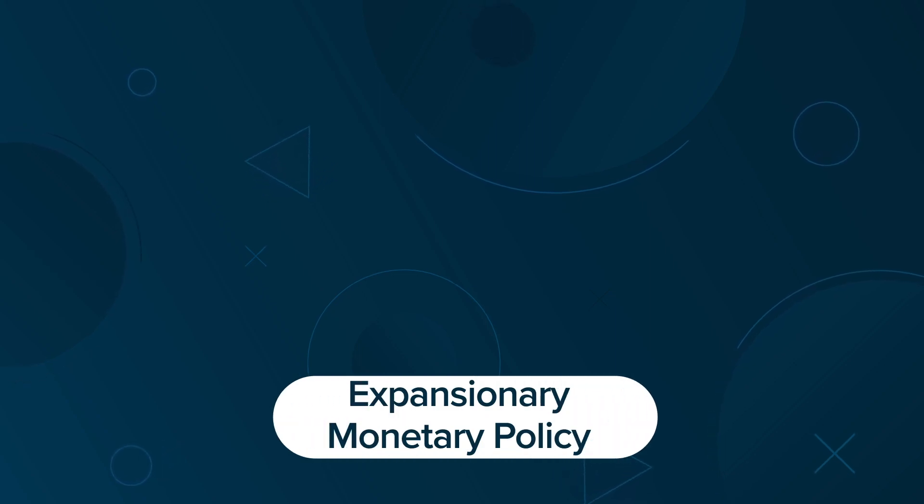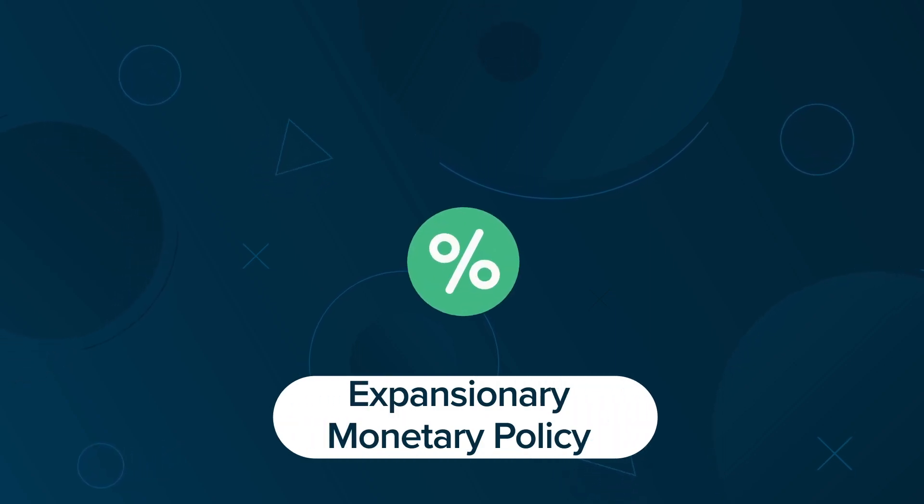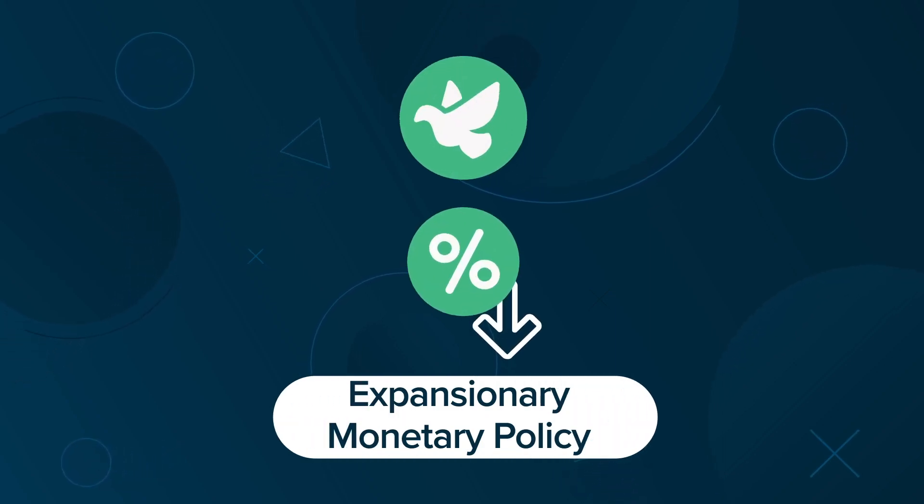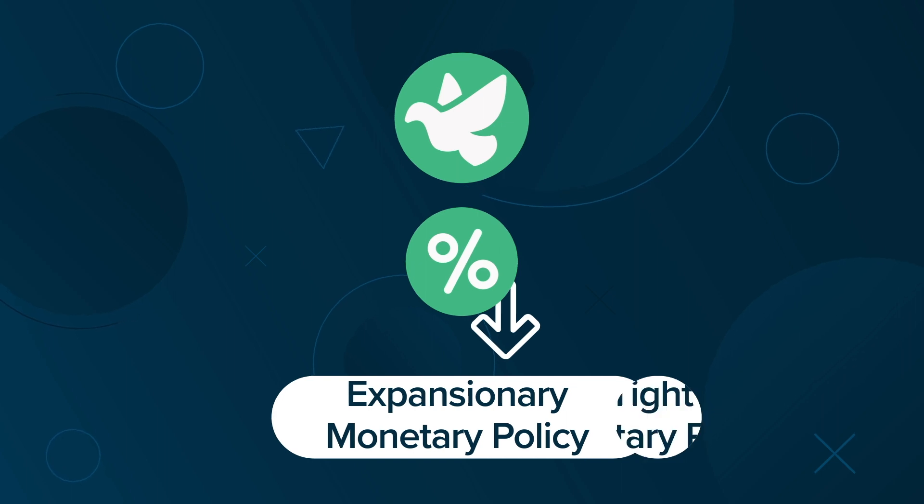For example, those in favor of expansionary monetary policy, such as low interest rates, are known as doves, while those in favor of tight monetary policy are known as hawks.